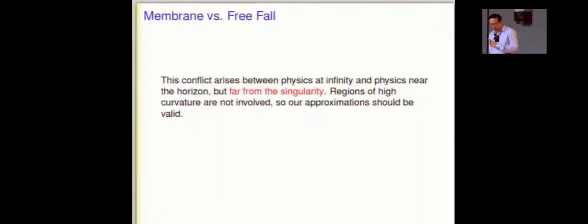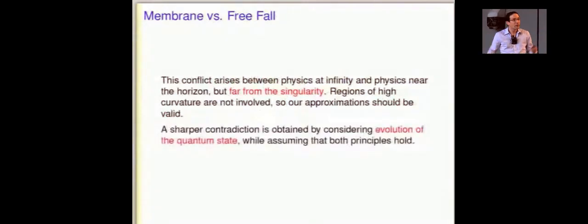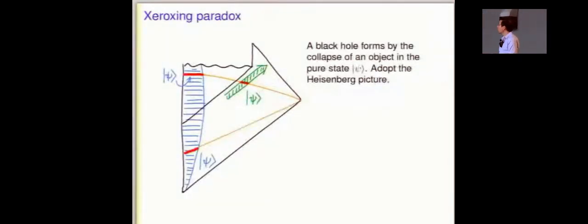One thing I want to say is that all the apparent conflicts I'm going to talk about arise in a regime where we think we have control. This is not somewhere near the singularity inside the black hole. Again, think of the black hole as a billion light years across. We understand physics in this regime. We can't appeal to some miracle coming from Planck-scale corrections. So, it's a really robust contradiction, it seems. To make it even sharper, let's now consider the evolution of a quantum state in the presence of this black hole. So, here's the star. This is a Penrose diagram. Light rays are at 45 degrees. This is the singularity. This is the horizon of the black hole. Here's r equals zero. Here's future infinity, past infinity. These orange lines are time slices.